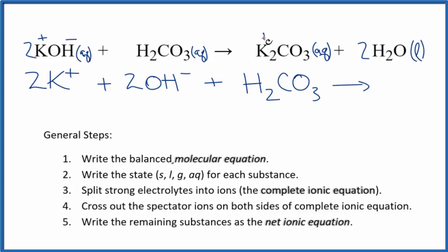For the products, we have a positive charge on each potassium. The whole carbonate is 2-. So we'll have two potassium ions, 2K+, plus that carbonate ion, CO3, 2-. And then for water, we don't split liquids apart in net ionic equations either. We don't split water apart. So it's just 2H2O.